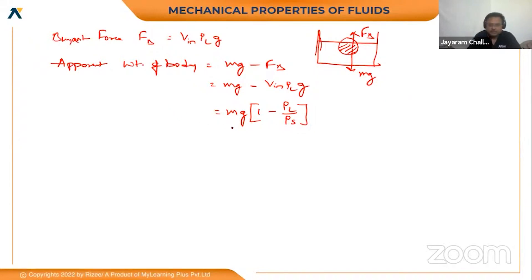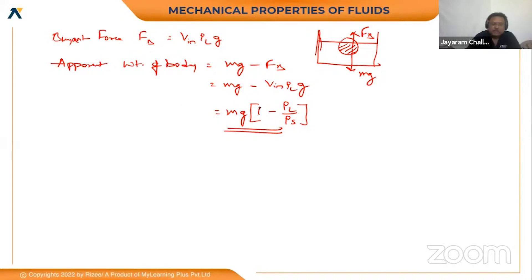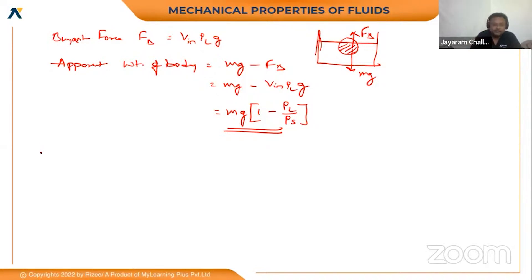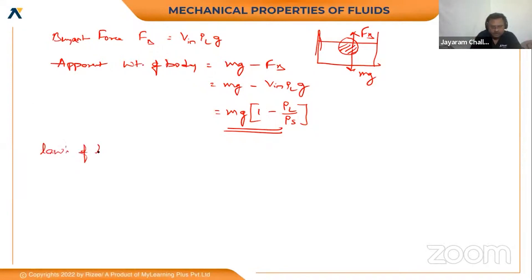Please remember this important relation: relative density equals loss of weight divided by apparent weight. Loss of weight equals weight in air minus weight in water (which is the buoyancy force FB). This is the condition for loss of notation.